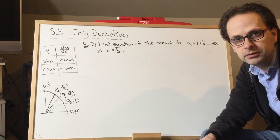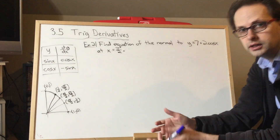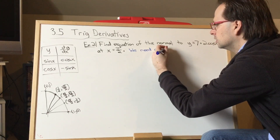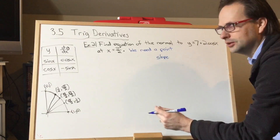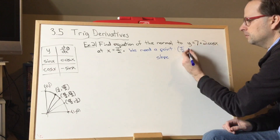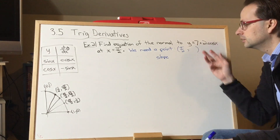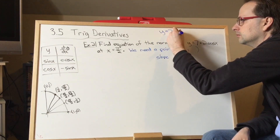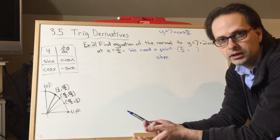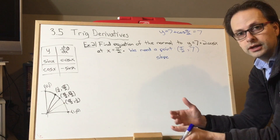We're going to do something a little more involved in this question. We're going to find the equation of the normal to y equals 7 plus 2 cos x at x equals pi over 2. Remember, we're finding the equation of a line here, which means we need two things: a point and a slope, so that we can use the point-slope formula. The point is pretty easy — the x value is given to us as pi over 2. And the y value we're going to find just by subbing in pi over 2 into this function. So y is going to be 7 plus 2 times the cosine of pi over 2. The cosine of pi over 2 is 0, so we're talking about a y value of 7 here. Great — that's half of our problem done. We found the point.